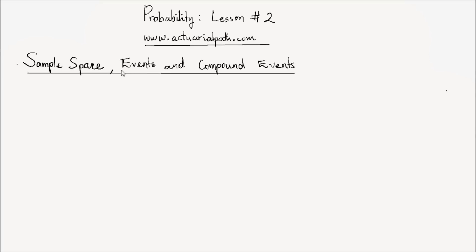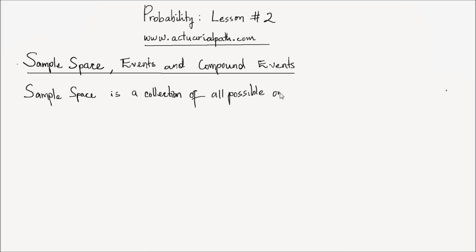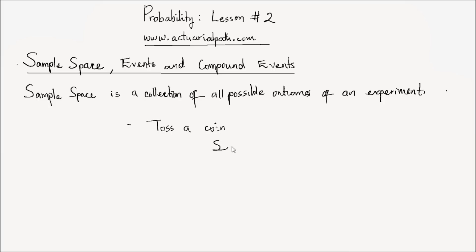Let's start with the sample space. A sample space is a collection of all possible outcomes of an experiment. Let's consider an experiment of tossing a coin. In this case, your sample space, which is denoted by capital letter S, contains the elements heads and tails, because you have two possible outcomes.